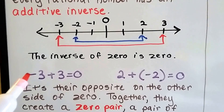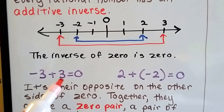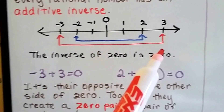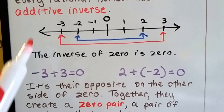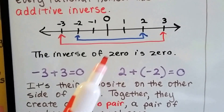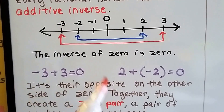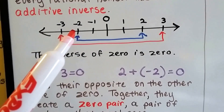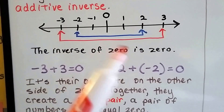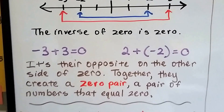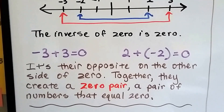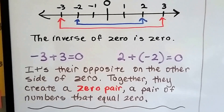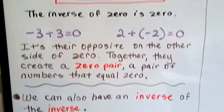We learned that the inverse of negative 3 is positive 3. They're the opposite across 0 on the number line. The additive inverse for 2 is negative 2, and vice versa — the additive inverse for negative 2 is positive 2. They create a zero pair: a pair of numbers that equals 0 when added together. That's the additive inverse.